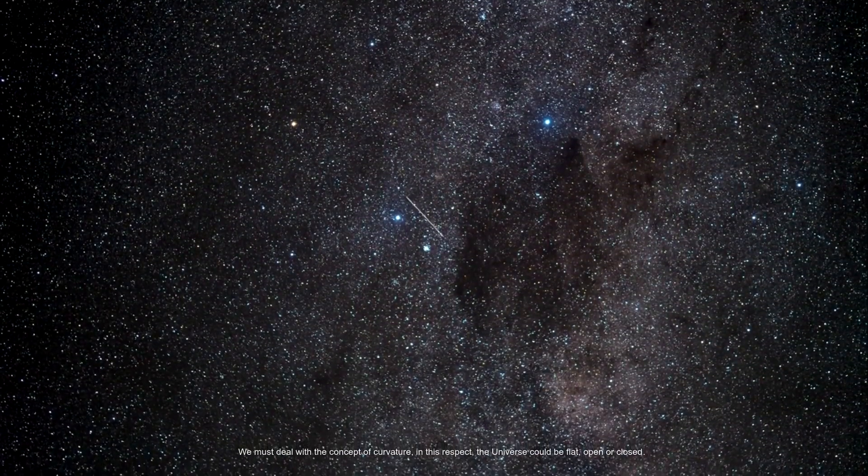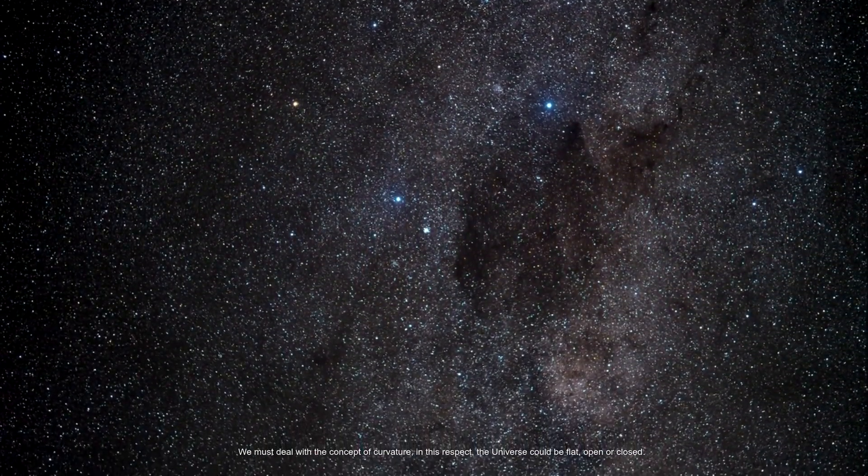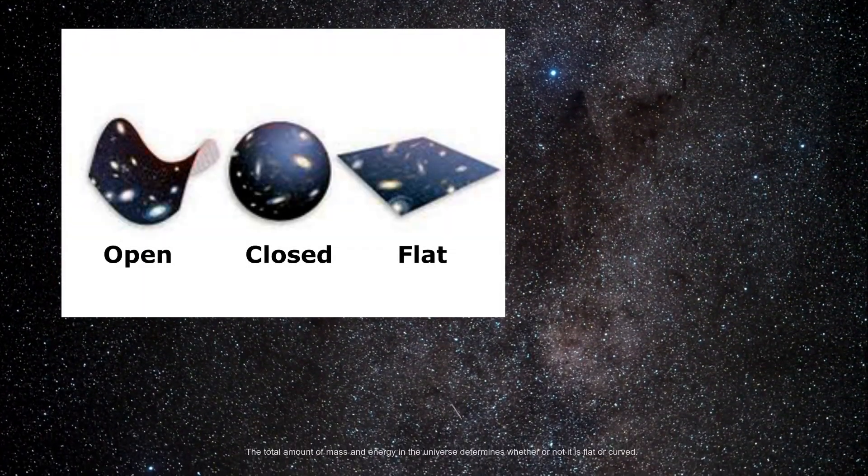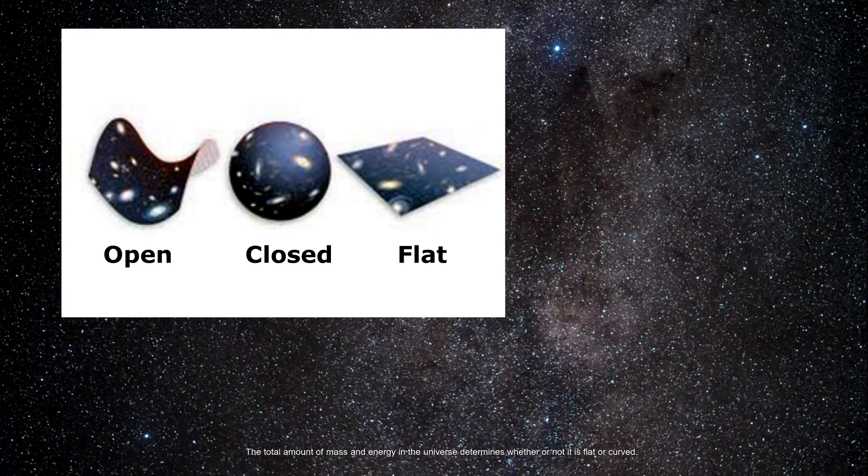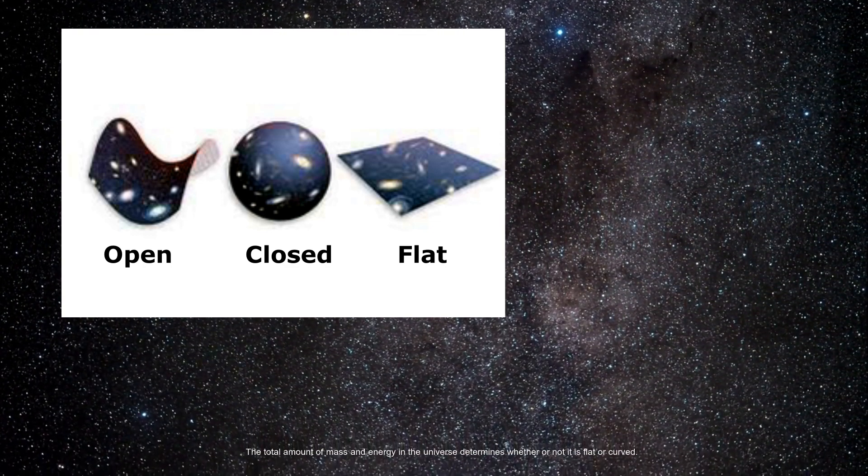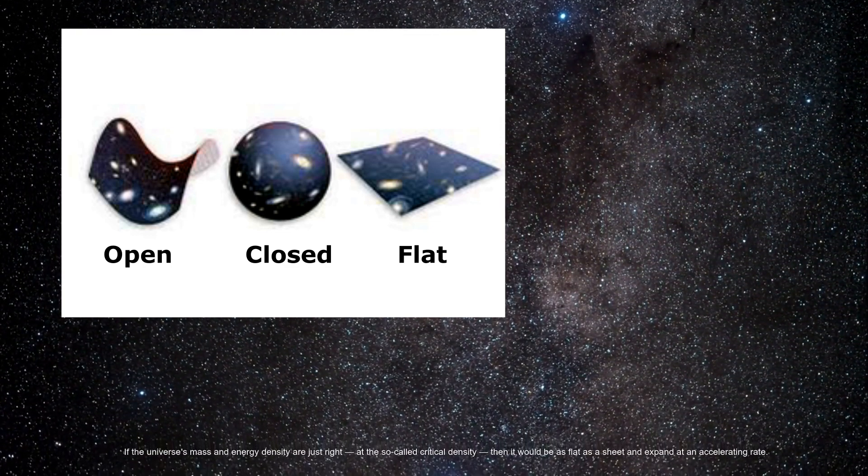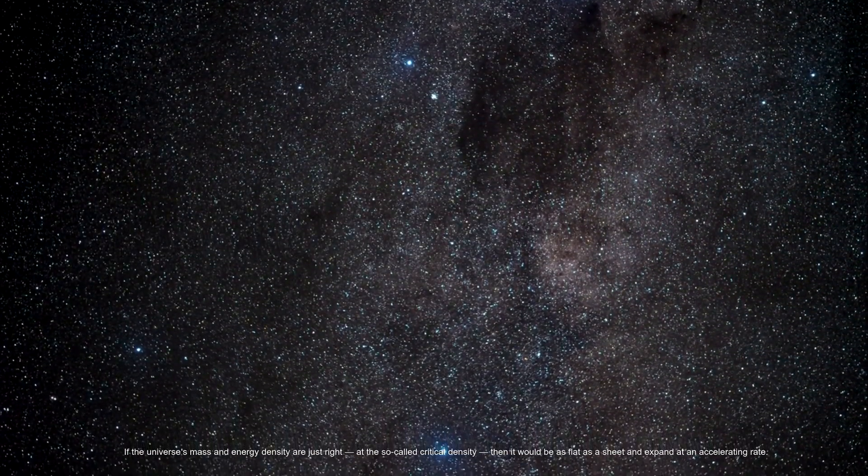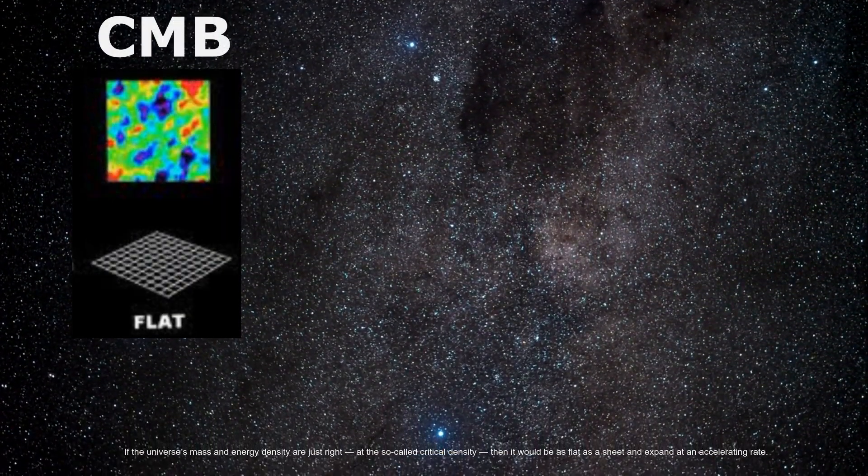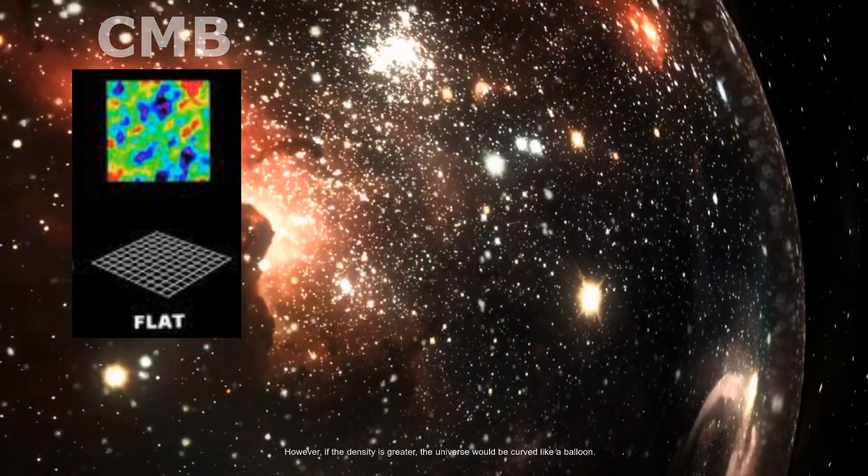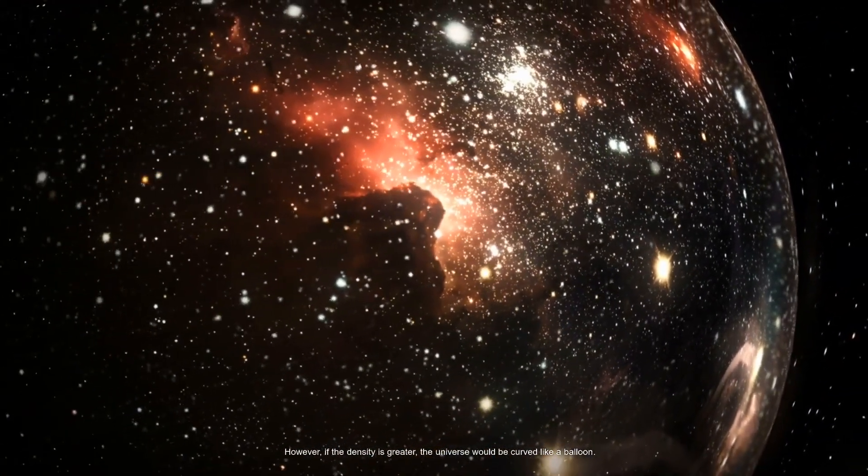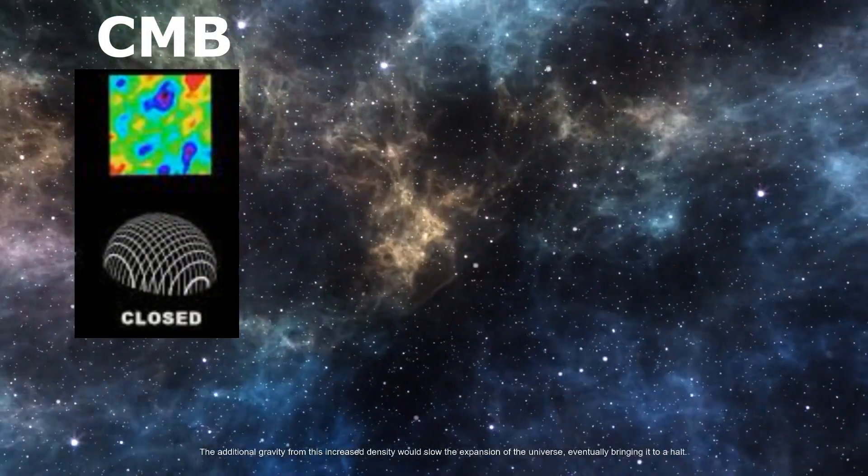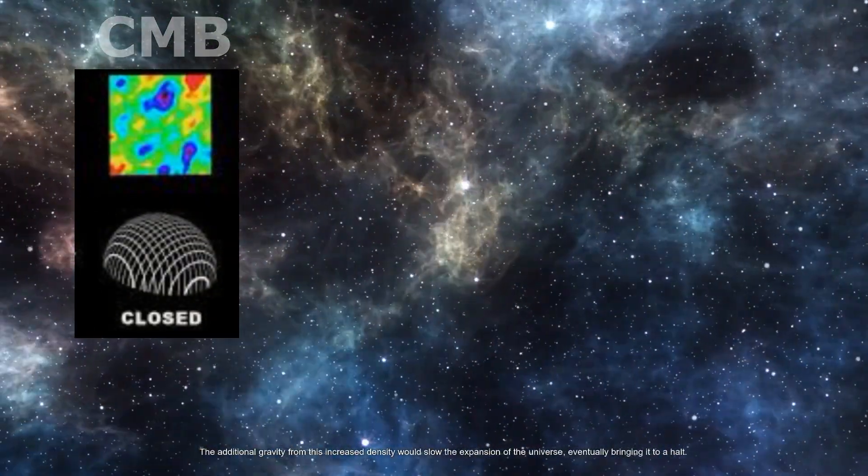We must deal with the concept of curvature. In this respect, the universe could be flat, open or closed. The total amount of mass and energy in the universe determines whether or not it is flat or curved. If the universe's mass and energy density are just right, at the so-called critical density, then it would be as flat as a sheet and expand at an accelerating rate. However, if the density is greater, the universe would be curved like a balloon. The additional gravity from this increased density would slow the expansion of the universe, eventually bringing it to a halt.